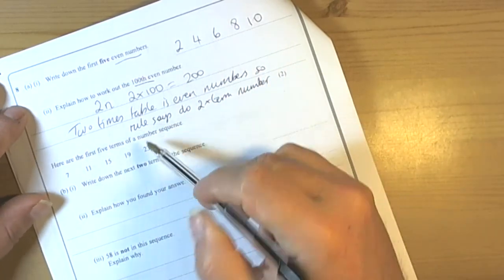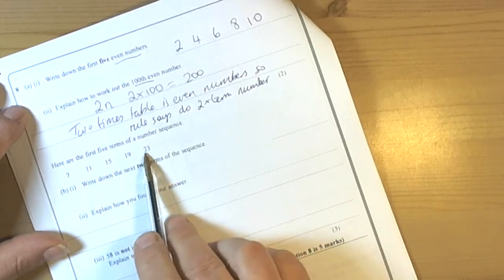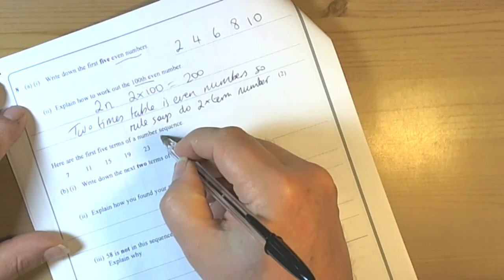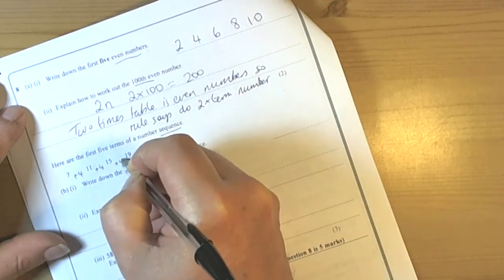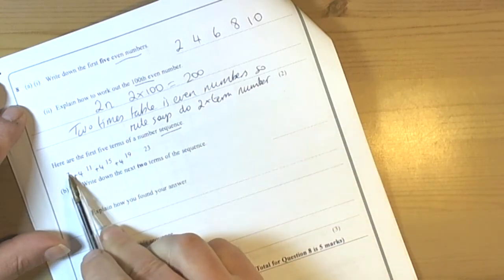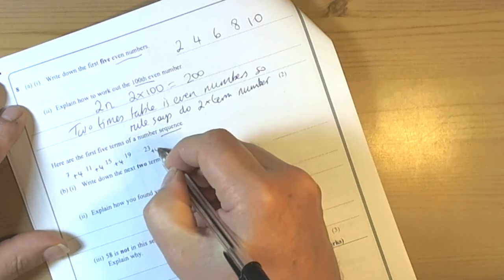Right here are the first five terms of a number sequence. So like all sequences we should look for a pattern because if it's a sequence there must be a pattern of some kind. So we can see that here we're adding 4 each time to get from the previous term to the next term. So it says write down the next terms of the sequence so we're going to add 4.